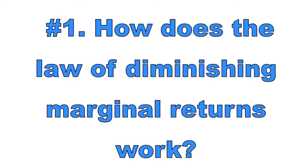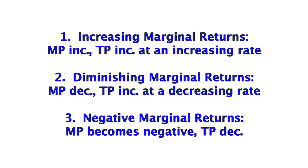Number one: how does the law of diminishing marginal returns work? As a firm increases its employment of an economic input such as labor, its total product will increase. Initially, total product will rise at an increasing rate, then continue to rise but at a decreasing rate, due to the law of diminishing marginal returns. Stage one is increasing marginal returns, when marginal product — the change in total product divided by the change in number of inputs — increases, and total product is rising at an increasing rate.